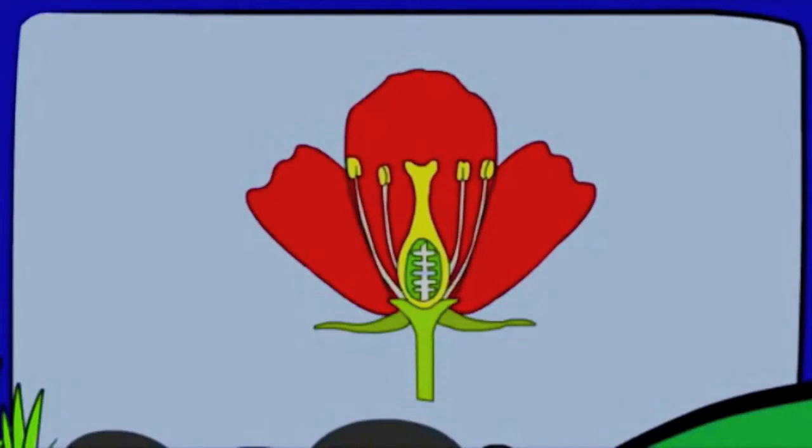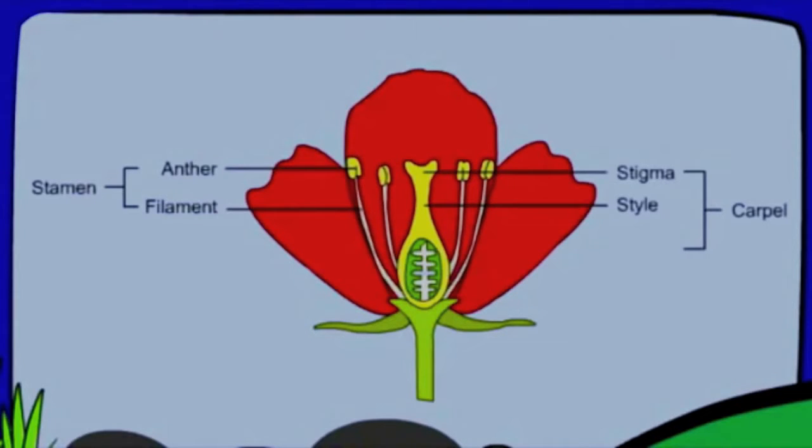A flower consists of the following parts: the stamen, which consists of the anther and the filament, the pistil, which consists of the stigma, the style, and the ovary, the petal, the ovules, the sepal, and the pedicel, a typical flower.